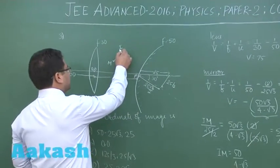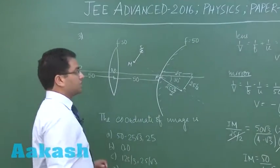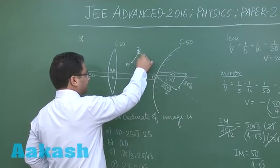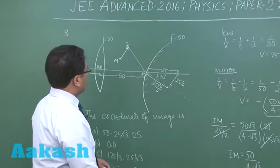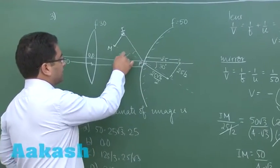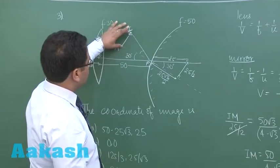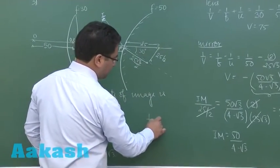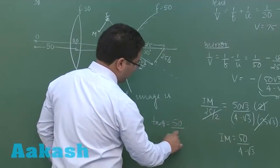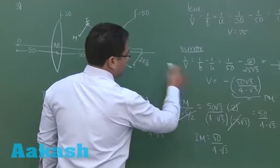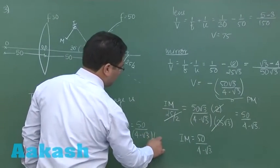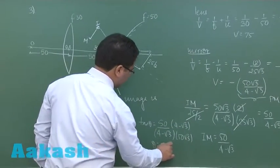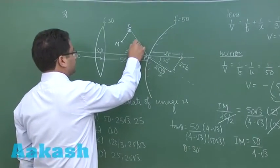Now we assign coordinates to the image. Calculating the angle θ at the image point: tan θ = IM / PM = [50/(4 - √3)] / [50√3/(4 - √3)] = 1/√3, giving θ = 30 degrees. So the image makes a 30-degree angle, consistent with the mirror's tilt.